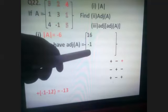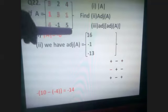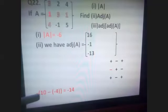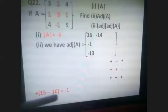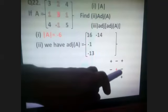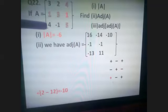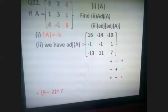Remember, when writing the adjoint directly, we find cofactors row-wise and write them column-wise. Cofactor of 4 comes here as minus 13. Cofactor of 1 is 10 plus 4 equals 14; due to its position sign, it becomes minus 14, and goes in the second column. Cofactor of 3 is 15 minus 16 equals minus 1, with sign adjustment written here. Cofactor of 1 gives 11. For the third row: cofactor of 4 is minus 10, cofactor of minus 1 is 1, and cofactor of 5 is 7. So I have the adjoint of A.